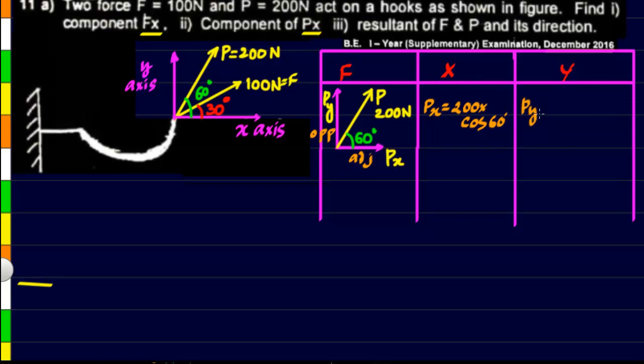Then Py value, Py value we are going to get 200 multiplied with sin of 60. Now we can see the Px is in positive x-axis so this is going to be positive and the Py is going to be in positive y-axis so this is also going to be positive.